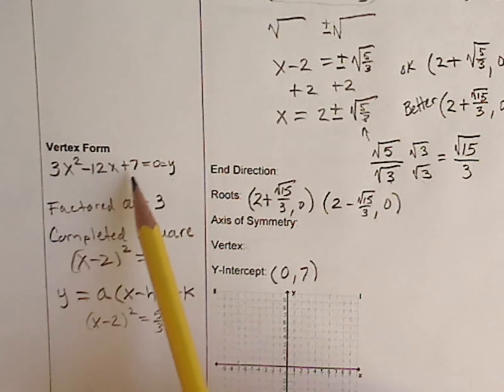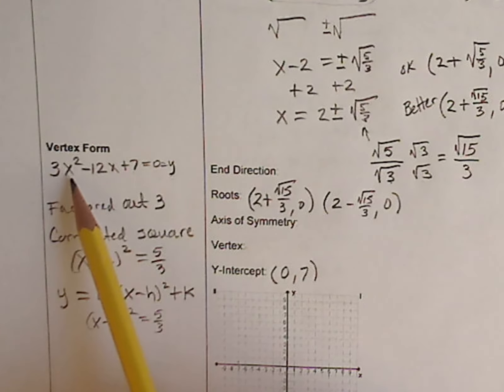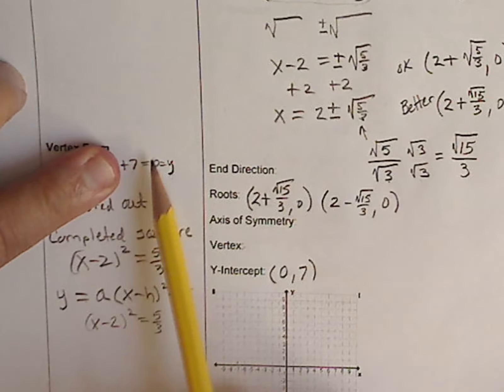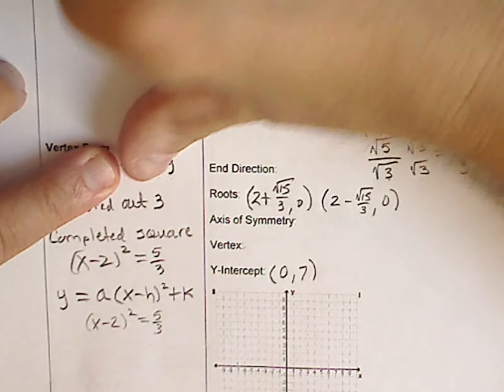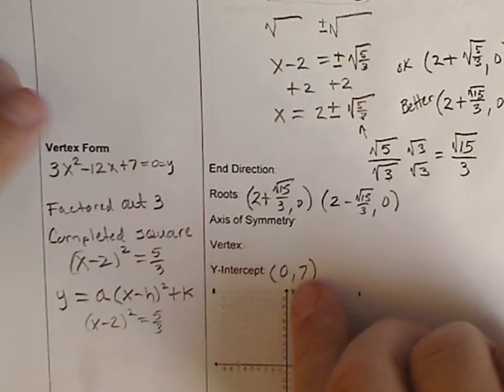If you'll recall, when we had the standard form, 7 actually represents our y-intercept. The y-intercept is when x is 0, we know the value of y. When x is 0, there's 0, we can find the y-intercept. If we set it to 0, 0 squared becomes 0, times 3 is 0, minus 12 times 0 is 0. All we're left with is a 7. So 7 is equal to y. So that's our y-intercept.